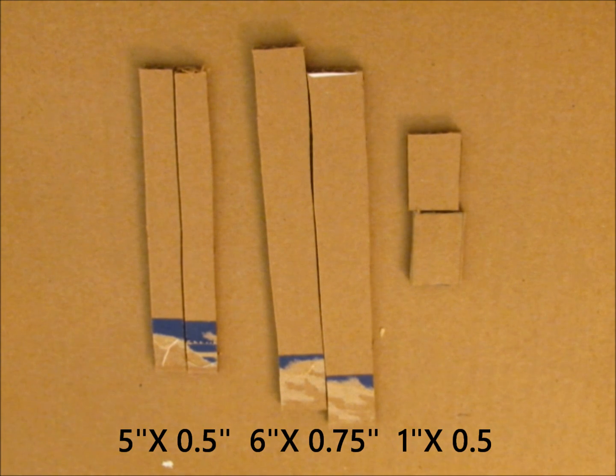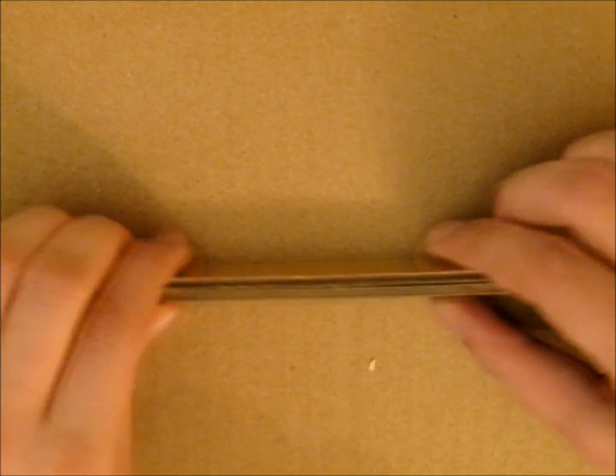First, cut six rectangles out of cardboard. Glue the two five-inch pieces together so they form a block.